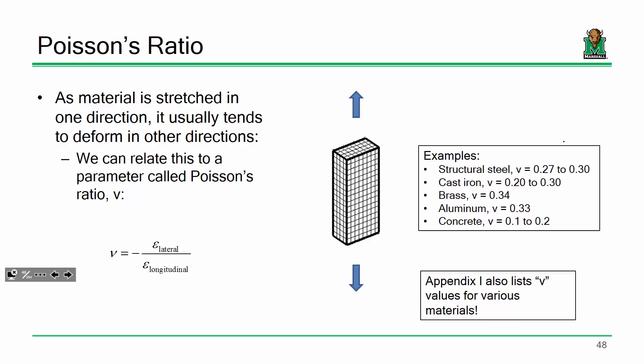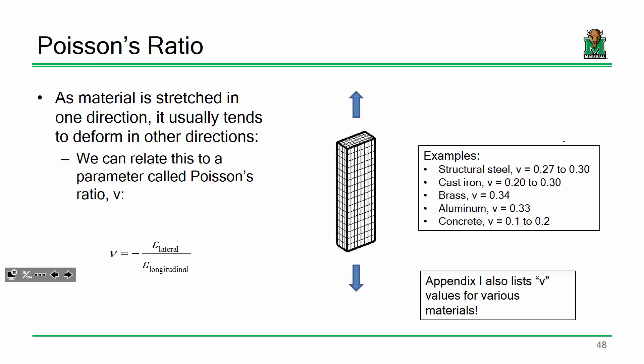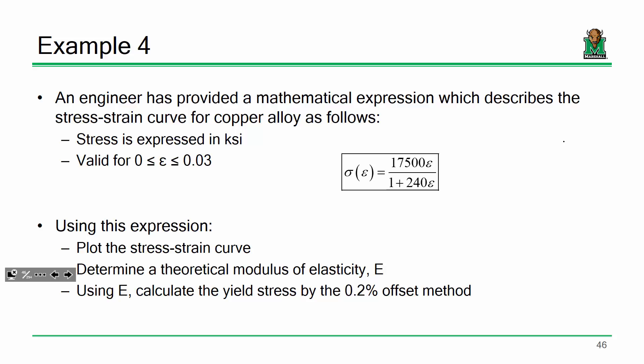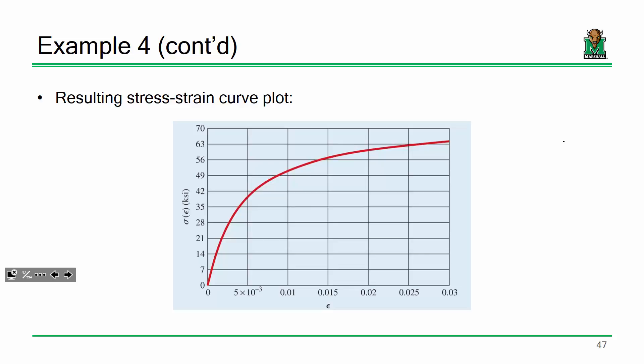Question: when computing the modulus of elasticity given a stress-strain curve, how do you get it? E is the slope of the linear region of that curve — it's the derivative. More specifically, for design purposes, the E value is the slope right at a strain of zero: take the derivative, set it equal to zero, and solve. That's your E value for design.